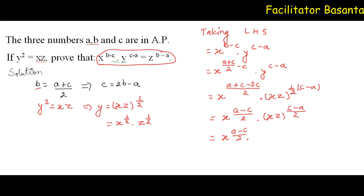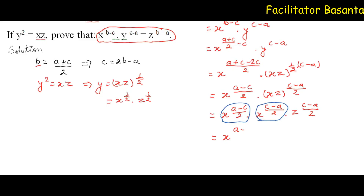This can be separated. We get X to the power C minus A by 2, dot Z to the power C minus A by 2. Now, combining these two X terms: X to the power A minus C divided by 2 plus C minus A divided by 2, dot Z to the power C minus A by 2.